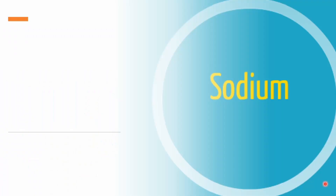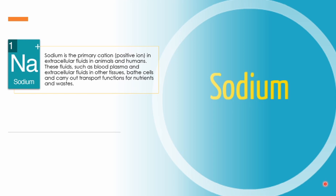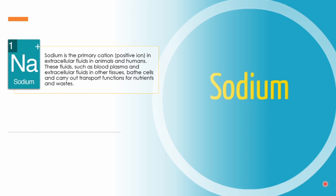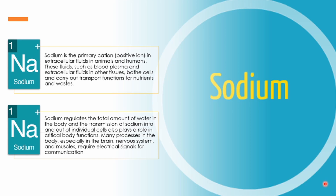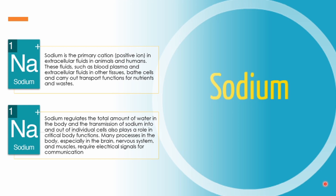What is the function of your sodium ions? Sodium is the primary cation — a positively charged ion — in extracellular fluids in animals and humans. These fluids, such as blood plasma and extracellular fluids in other tissues, bathe cells and carry out transport functions for nutrients and wastes. Sodium regulates the total amount of water in the body, and the transmission of sodium into and out of individual cells plays a role in critical body functions. Many processes in the body, especially in the brain, nervous system, and muscles, require electrical signals for communication. The movement of sodium is critical in the generation of these electrical signals.